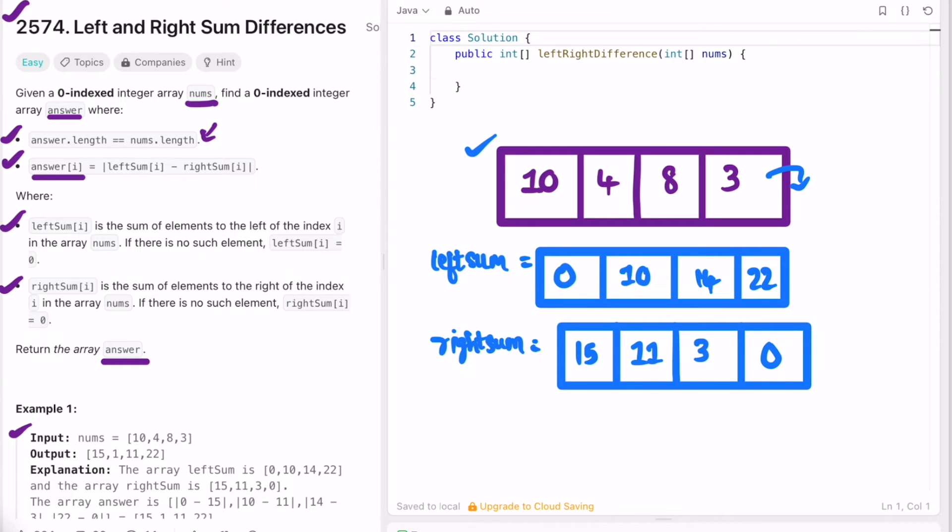Now we need to find the absolute difference between all the elements, so let's declare our answer array. The difference between 0 and 15 is 15. Note you are finding the absolute difference, so the output will always have positive numbers. So this difference is 1 because 10 minus 11 is minus 1, so absolute value of minus 1 is 1.